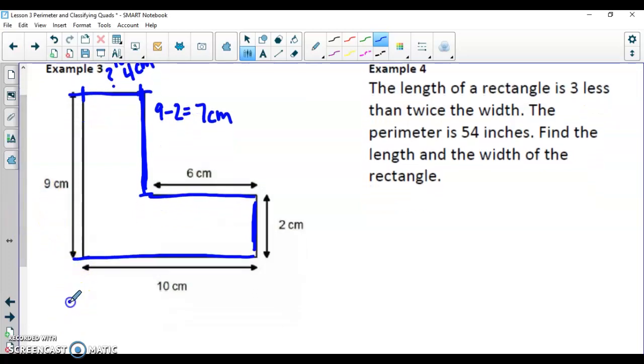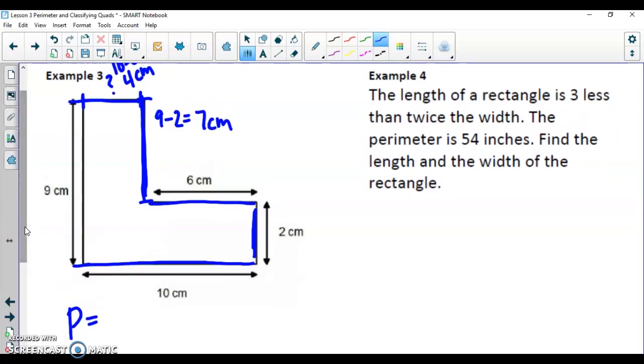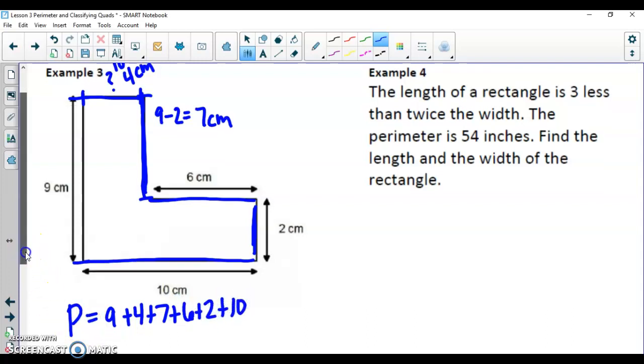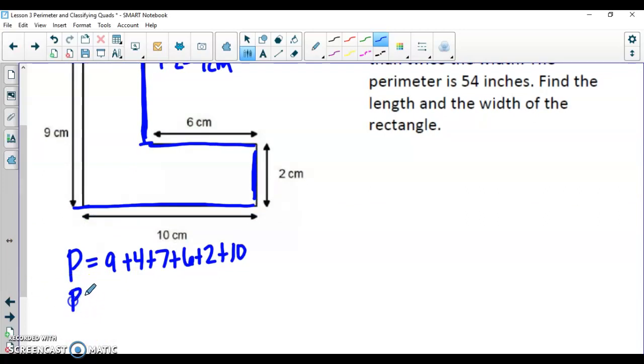Go ahead, take a minute now. Know now that all of your sides are actually labeled and add up and calculate what the perimeter of this shape is. Going around all the sides, you want to add them up. So I'm going to start 9 plus 4 plus 7 plus 6 plus 2 plus 10. So those are all my sides that are in here. And if I add these up, my perimeter is going to be 38 centimeters here.